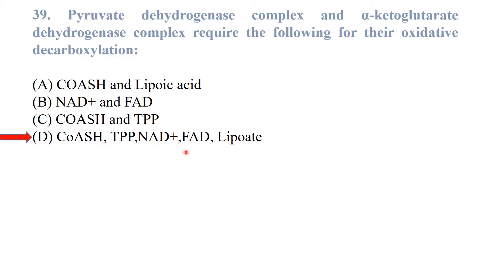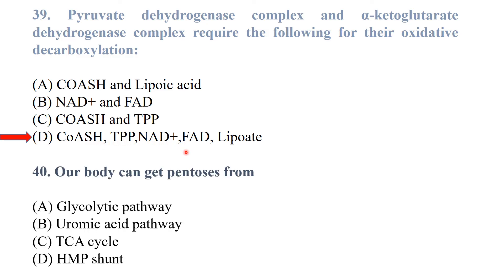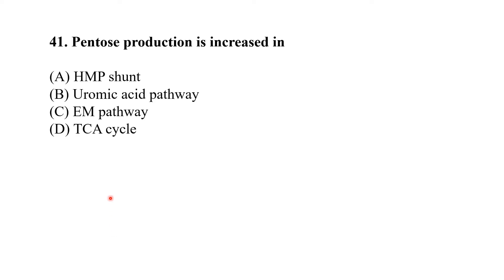Our body can get pentoses from the HMP shunt. Pentose production is increased in the HMP shunt.